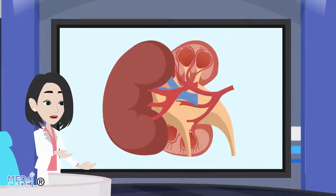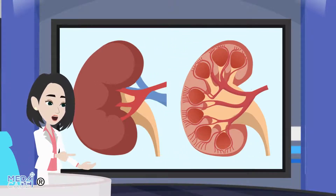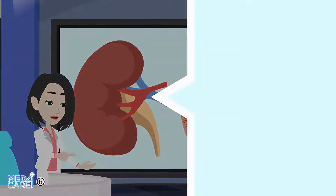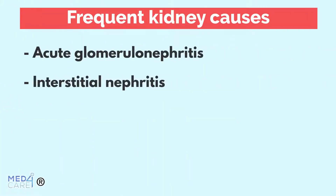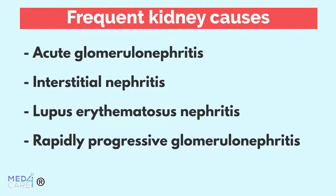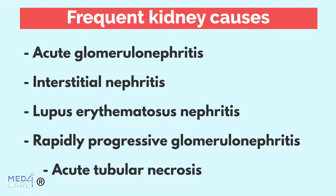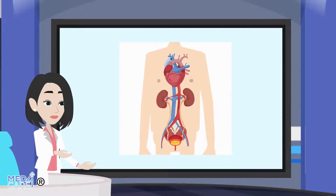The renal causes, on the other hand, are attributable to a direct pathological alteration of the renal parenchyma. Renal causes include, for example, acute glomerulonephritis, interstitial nephritis, lupus erythematosus nephritis, rapidly progressive glomerulonephritis, and acute tubular necrosis.